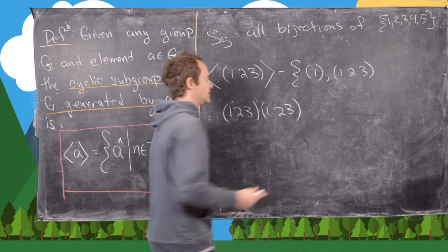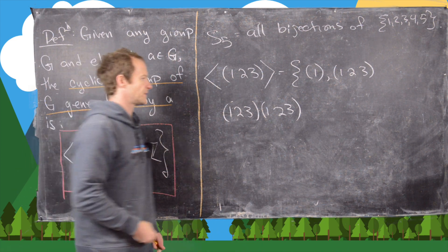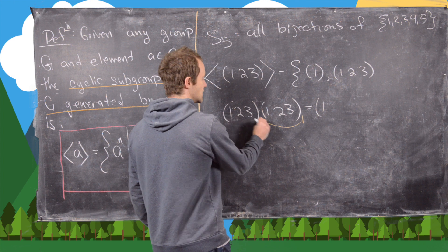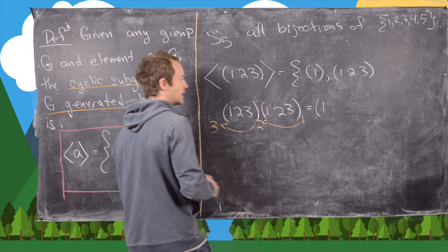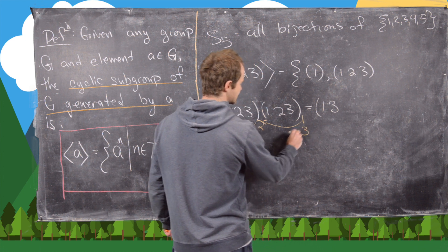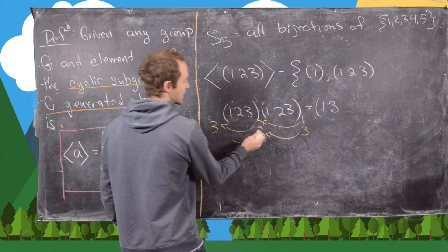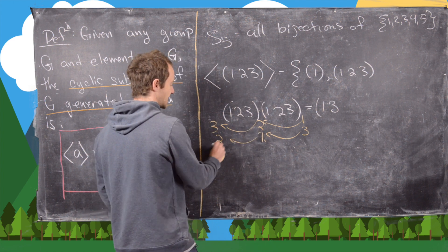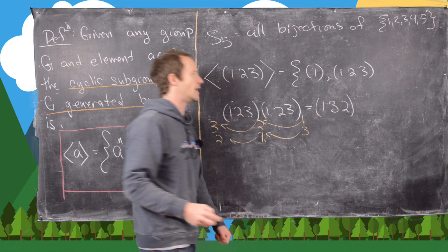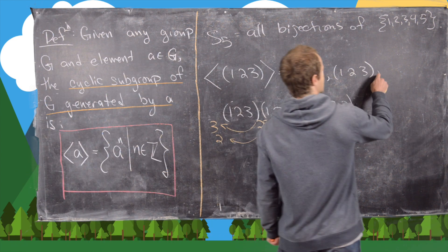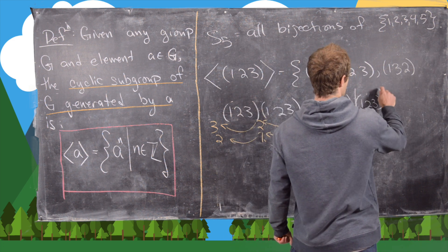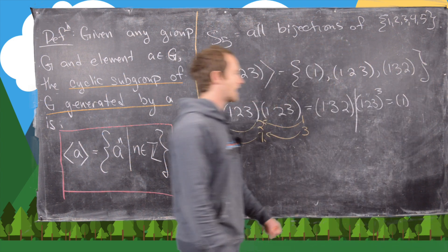To compute (1 2 3) squared, we apply the cycle to itself. Starting with 1: through the first cycle 1 goes to 2, then through the second 2 goes to 3, so 1 maps to 3. For 3: through the first cycle 3 goes to 1, then through the second 1 goes to 2, so 3 maps to 2. And 2 maps to 1 similarly. So (1 2 3) squared equals (1 3 2). Then (1 2 3) cubed is the identity, closing the group.